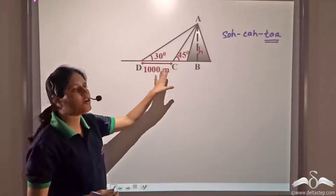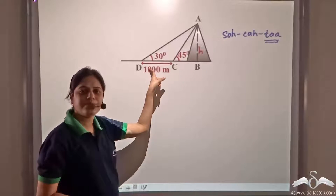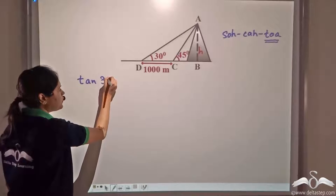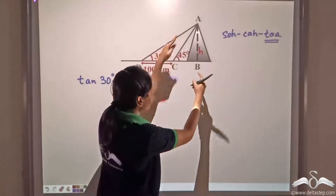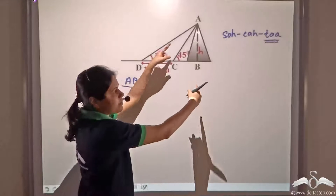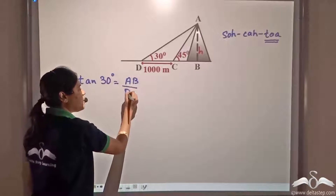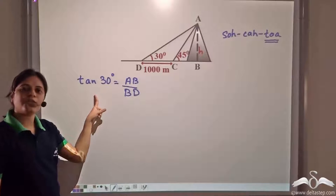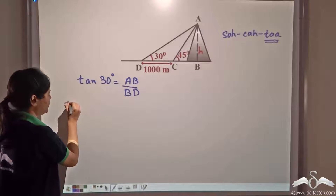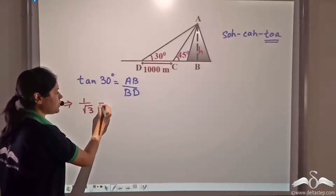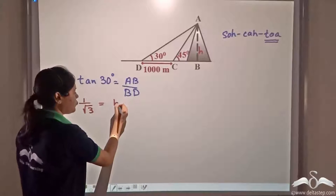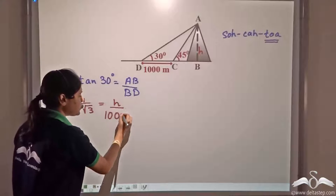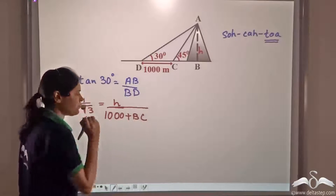Let's consider triangle ABD first. In triangle ABD, tan thirty degrees is equal to opposite by adjacent, that is AB by BD. Plugging in the values, tan thirty degrees equals one by root three, AB is H, and BD is one thousand plus BC. We do not know what BC is, so it is one thousand plus BC.